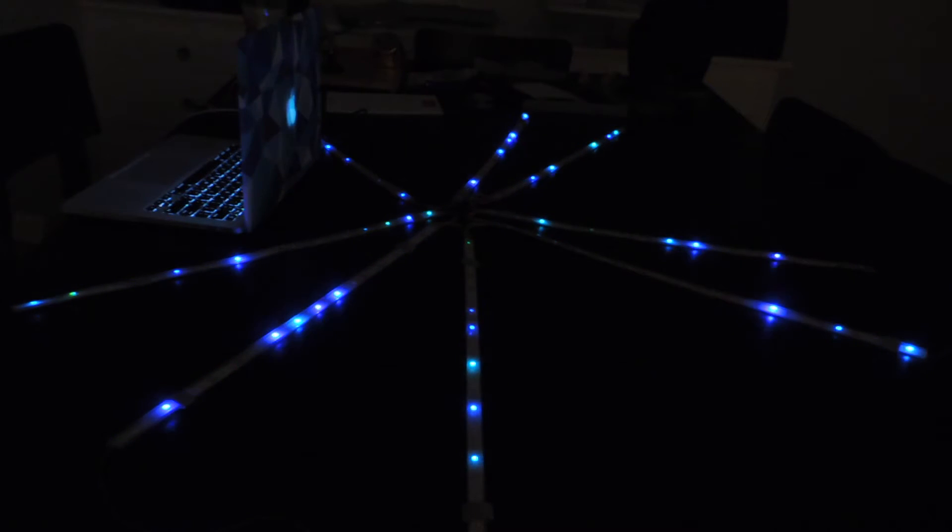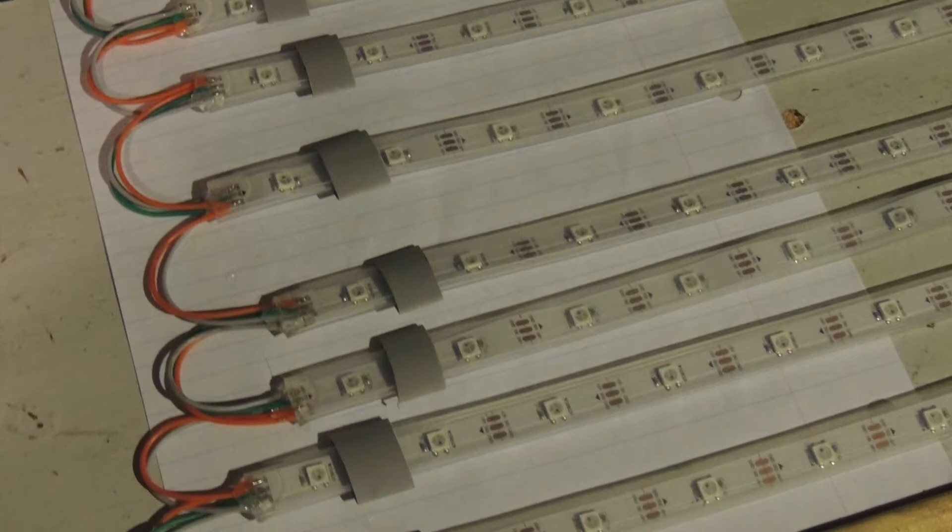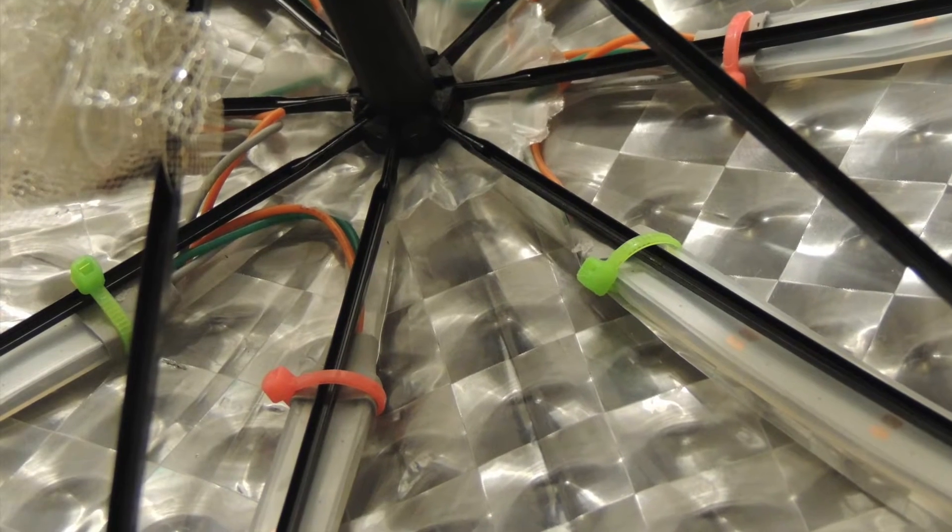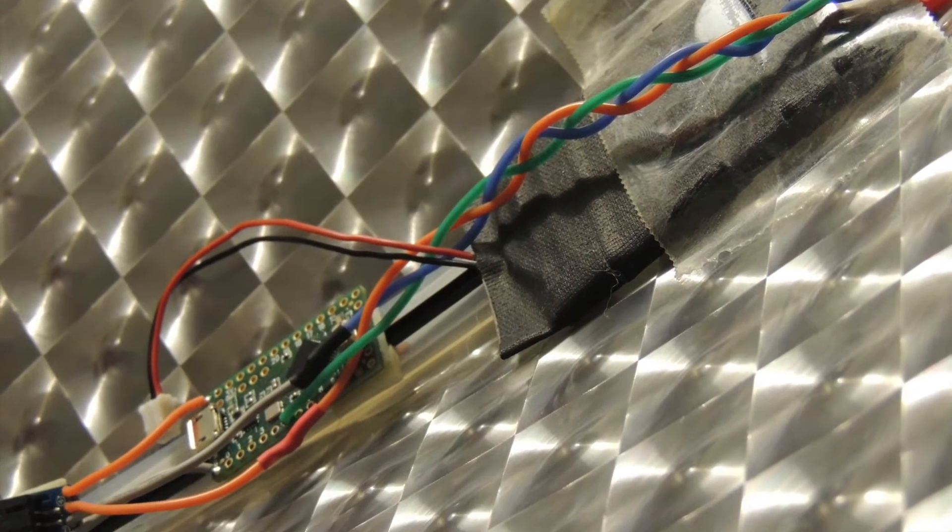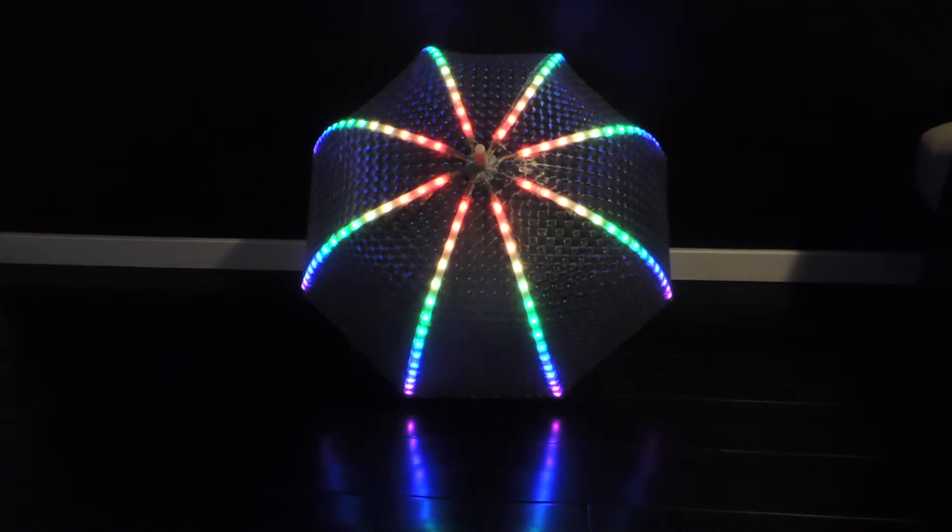Then I insulated the strips and installed them into the umbrella with zip ties. I connected a microcontroller—a Teensy LC—and a lithium polymer battery, then uploaded another sketch.